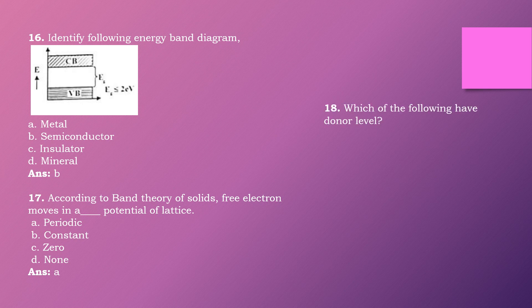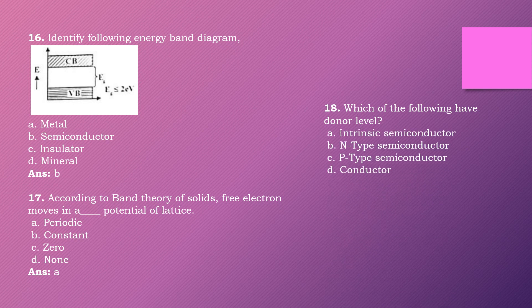Question eighteen: Which of the following has a donor level? Options are: intrinsic semiconductor, N-type semiconductor, P-type semiconductor, conductor. The right answer is option B: N-type semiconductor.